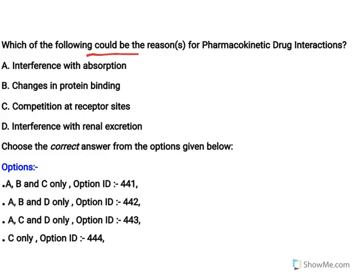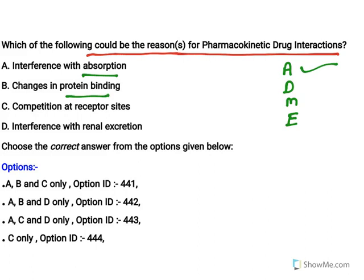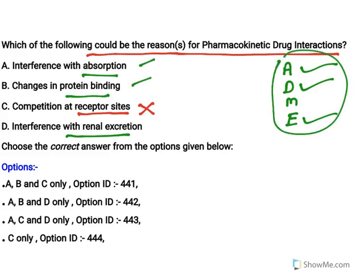Which of the following are reasons for pharmacokinetic drug interactions? Pharmacokinetics covers absorption, distribution, metabolism, and elimination. Interference with absorption is pharmacokinetic; changes in protein binding affect distribution — both are true. Competition at receptor sites is pharmacodynamic, not pharmacokinetic. Interference with renal excretion is pharmacokinetic. So options A, B, and D are correct.